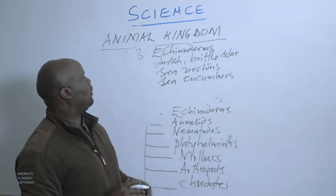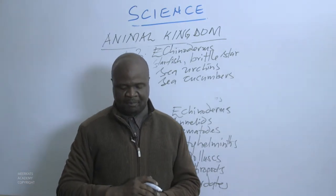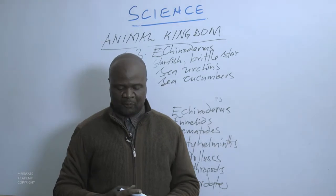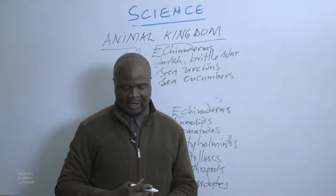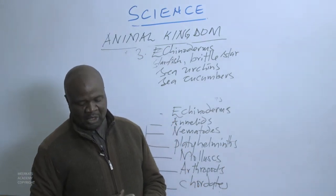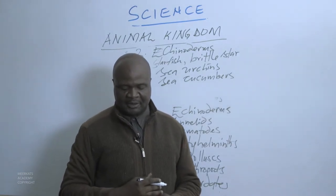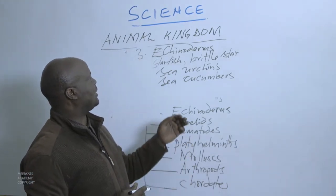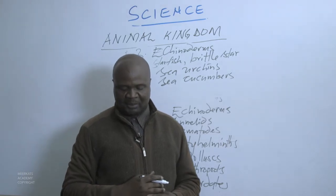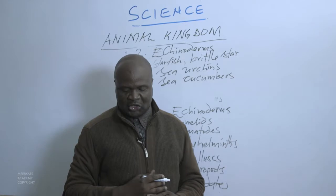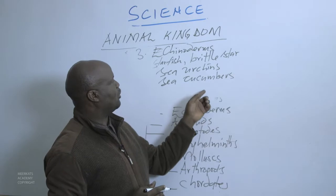This group of Echinoderms is found within seas, located towards the coastal area. The starfish, brittle star, and sea urchins have spiny skin. Another characteristic of Echinoderms is their spiny skin, but the skin of sea cucumbers is leathery.